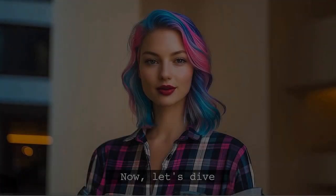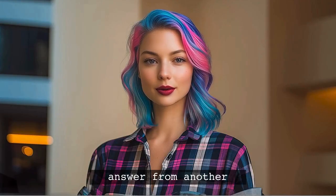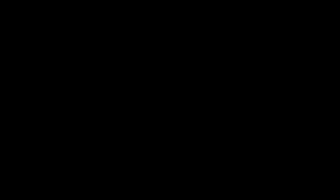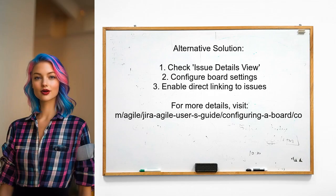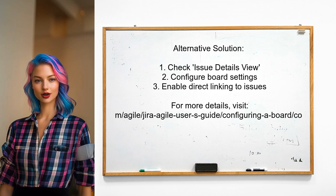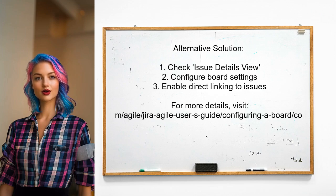Here's a different answer from another user. An alternative solution suggests checking the issue details view of your Jira board. This setting may allow you to configure how issues are displayed, potentially enabling direct linking to the issue from the board or backlog.